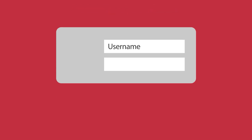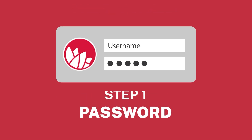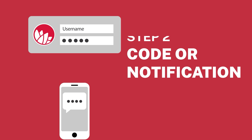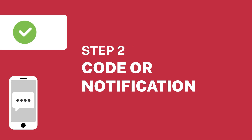What does that mean for you? It means when you log in, you'll use your password and then confirm your identity using a second step, like a code or a notification. For even more protection, you can opt for up to three steps.